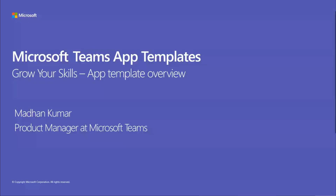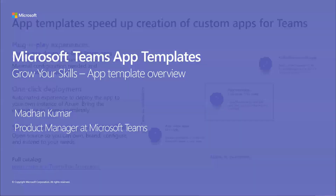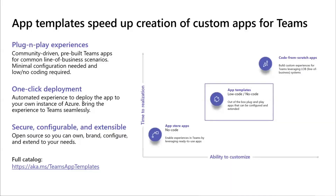Before we deep dive into the Grow Your Skills app template, let's quickly talk about what app templates are. App templates are production-ready apps for Microsoft Teams that are community-driven, open source, and available on GitHub. Each app template contains detailed instructions for deploying and installing the app for your organization and provides a ready-to-use app you can install and begin using immediately. Most importantly, the source code is available — you can explore it in detail, fork or clone the code, and alter it to meet your specific needs or your customer's needs. As Vesa mentioned earlier, this can also be used as a reference solution.